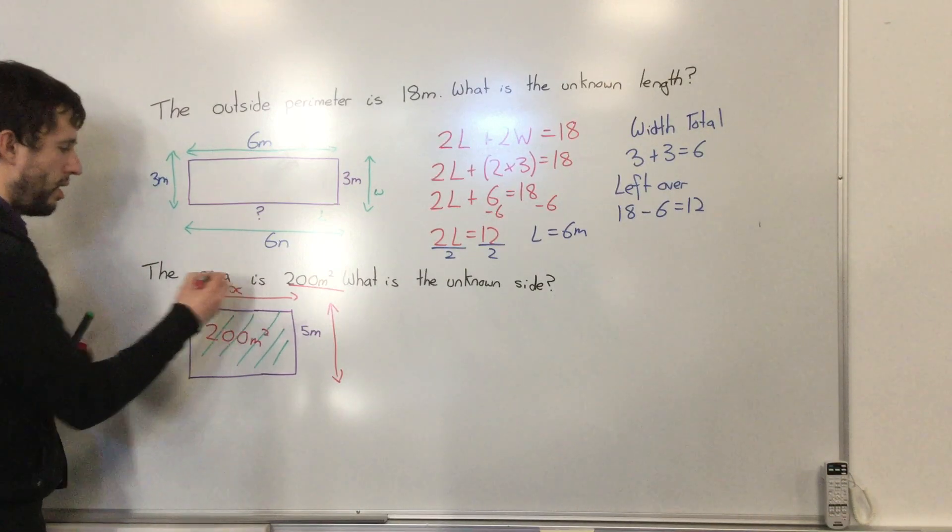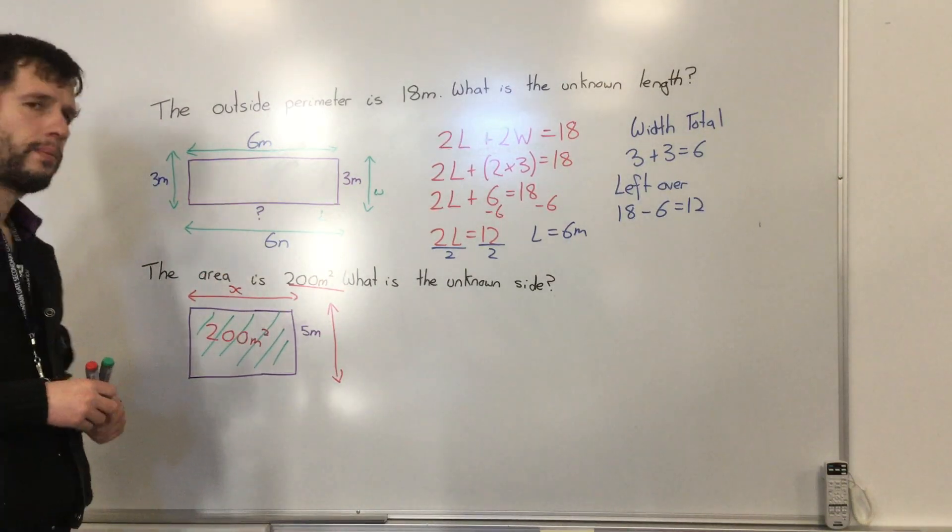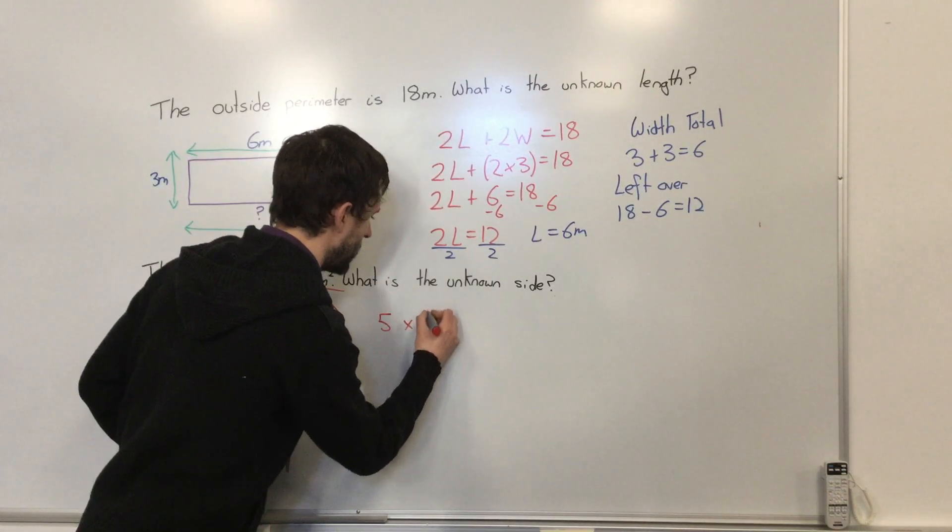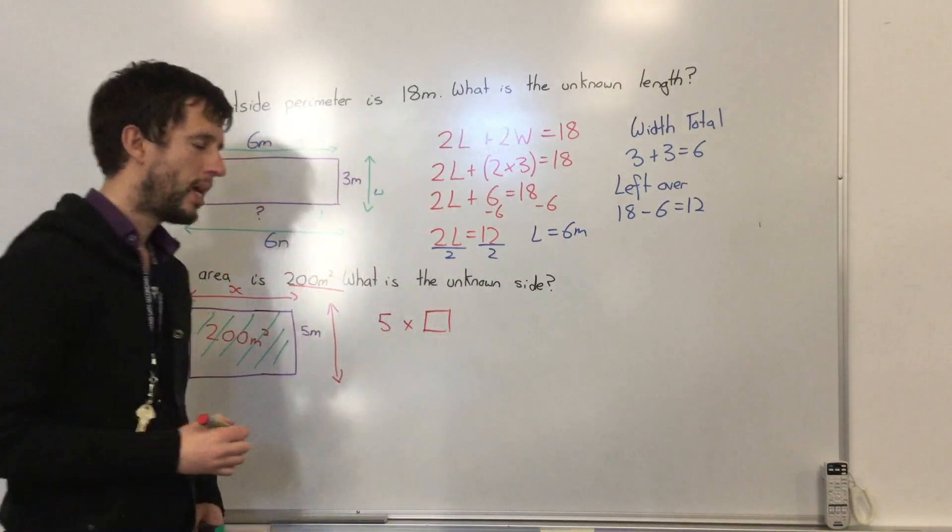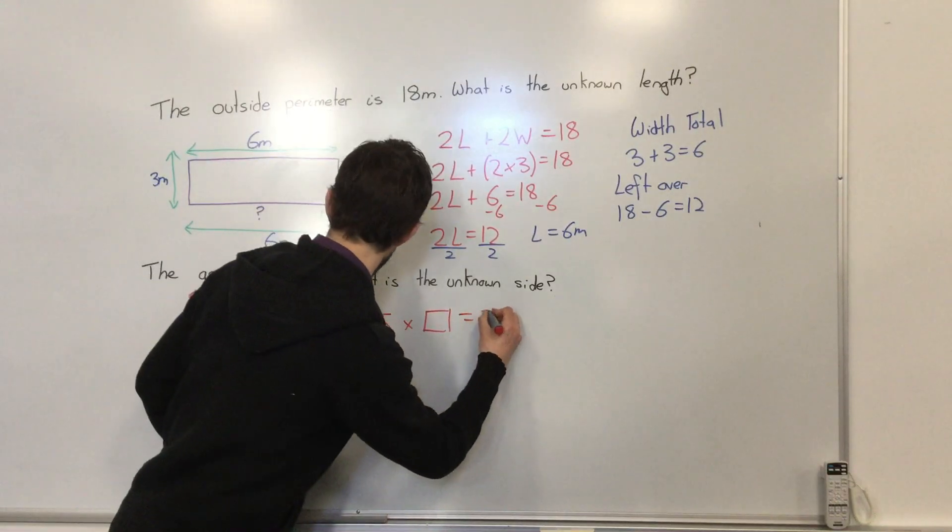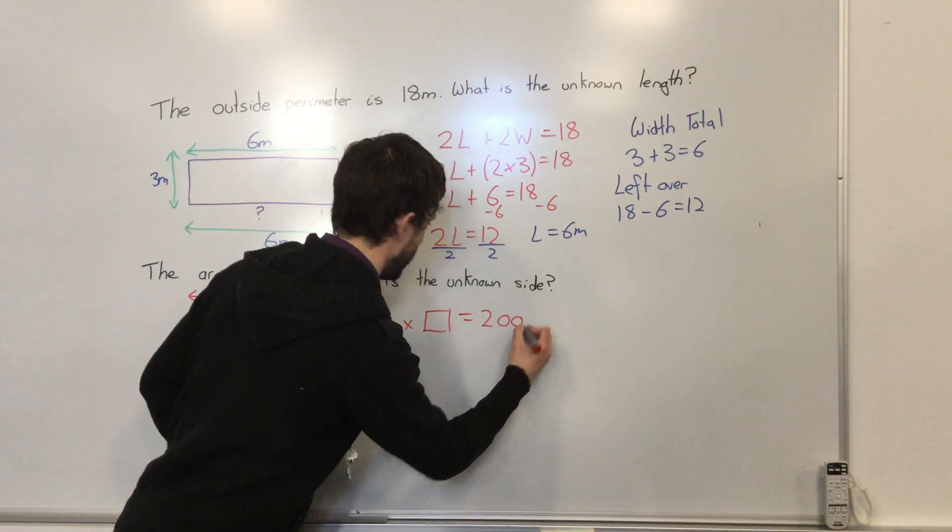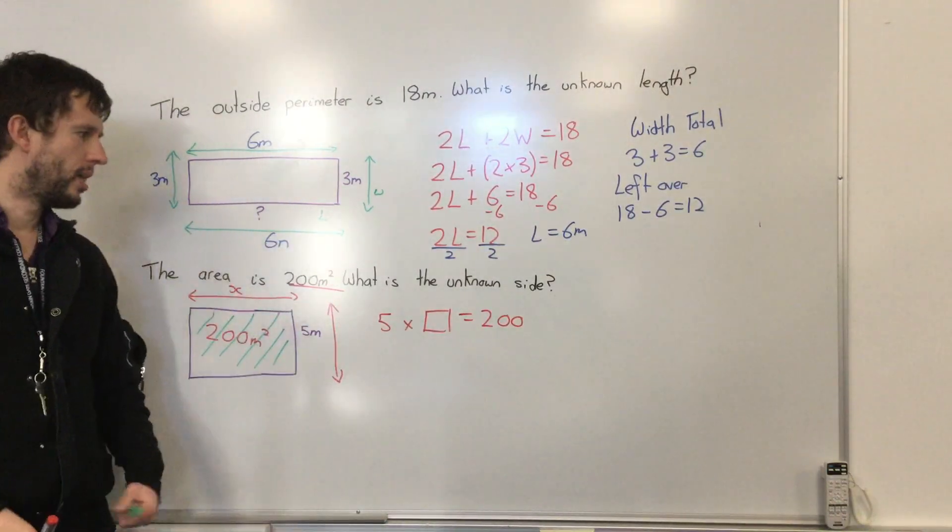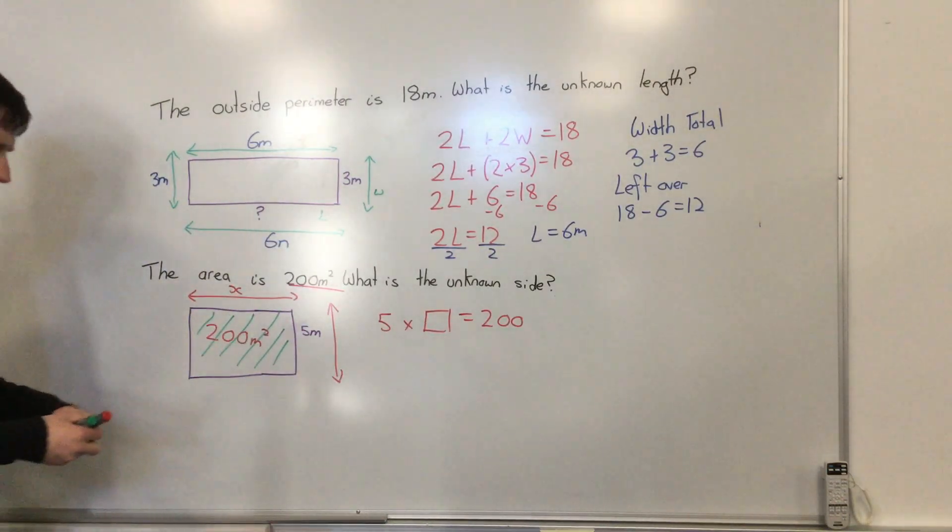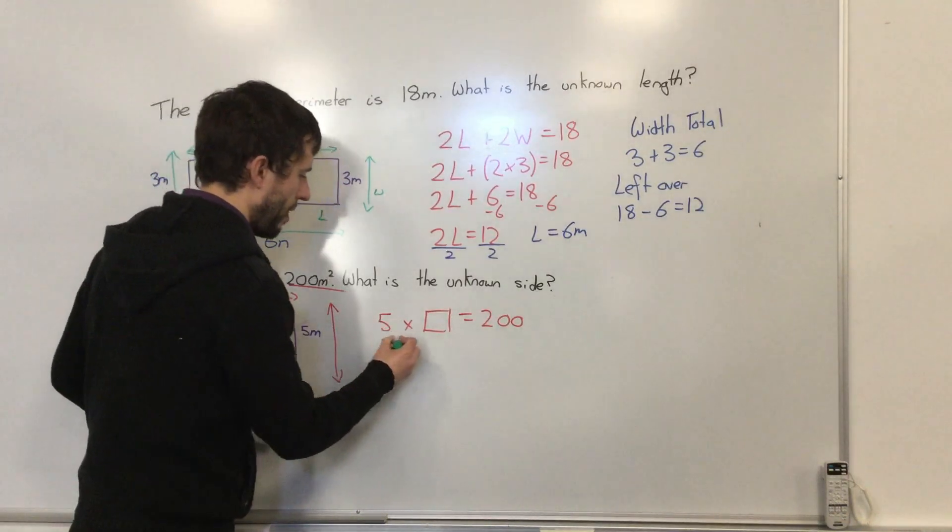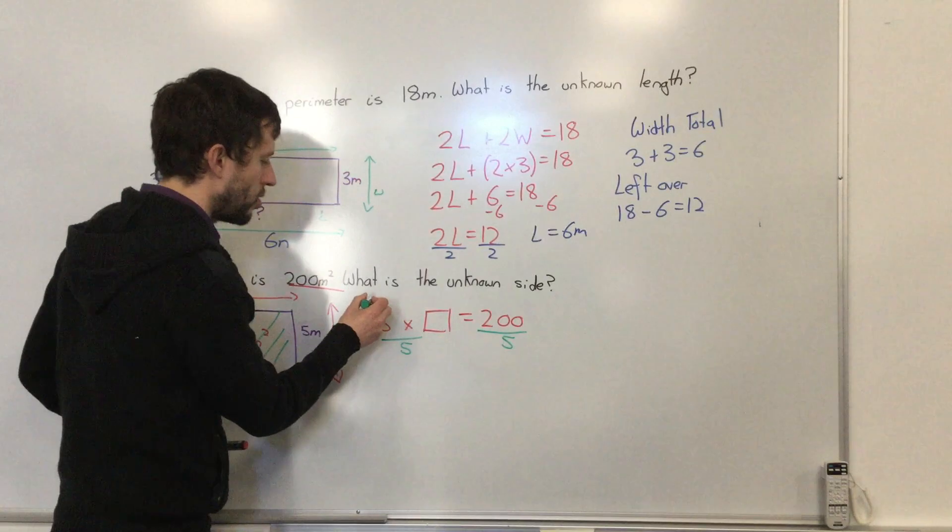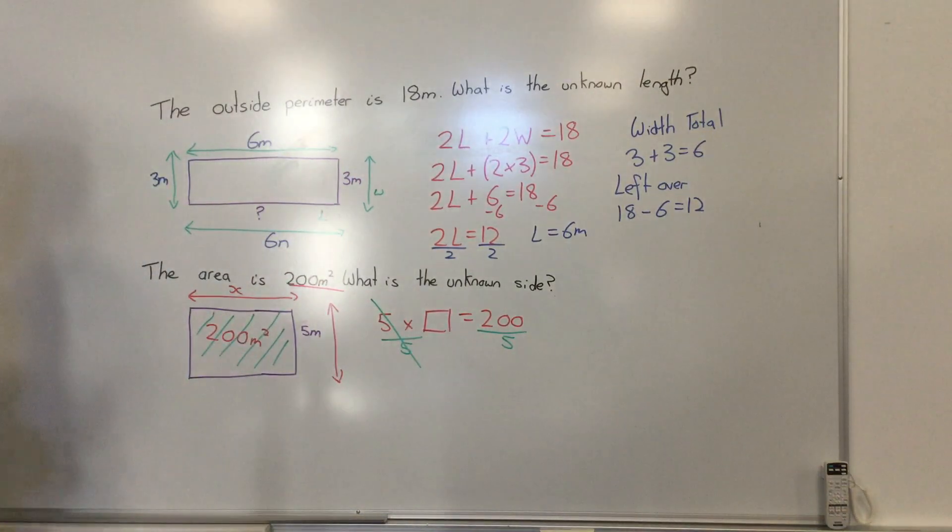So this is unknown. That just means I know 5 times something must equal 200. Now what's the opposite of times by 5? Divide by 5. So if I divide this side by 5 and this side by 5, I cancel this out using some algebra here.